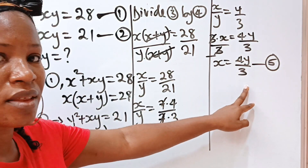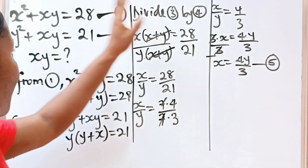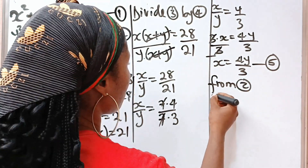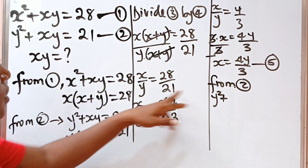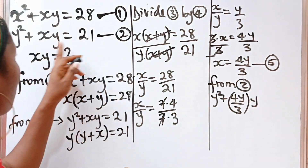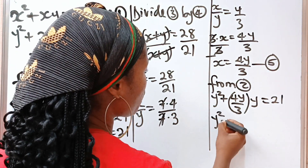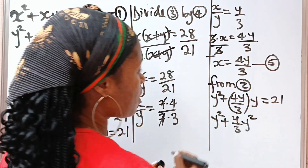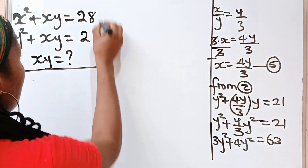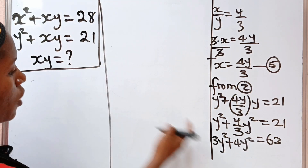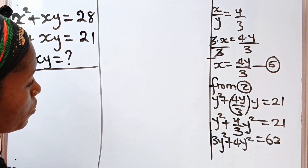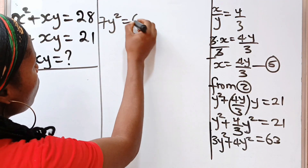Now, since x is equal to 4y over 3, let's substitute equation 5 into equation 2. From equation 2, we have y squared plus xy. Instead of x, we substitute 4y over 3, multiplied by y, equals 21. So we have y squared plus 4 over 3 times y squared equals 21. Multiplying through by 3: 3y squared plus 4y squared gives us 7y squared equals 63.